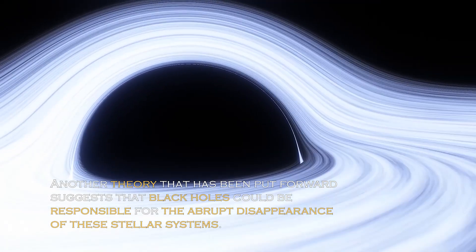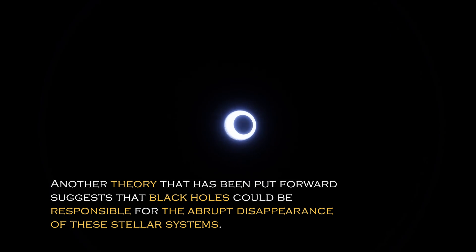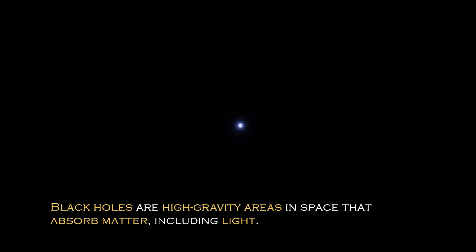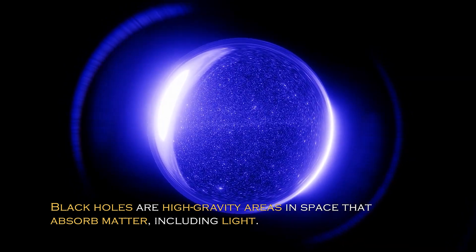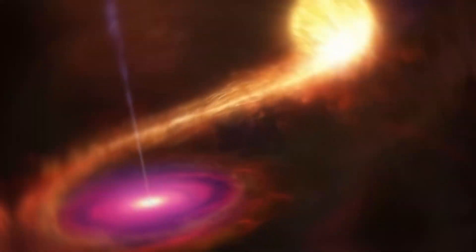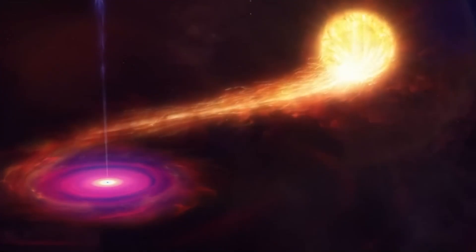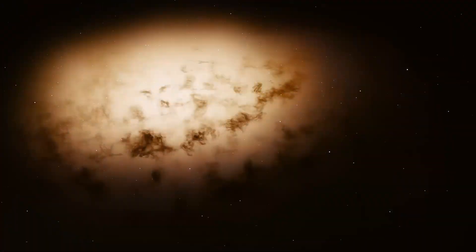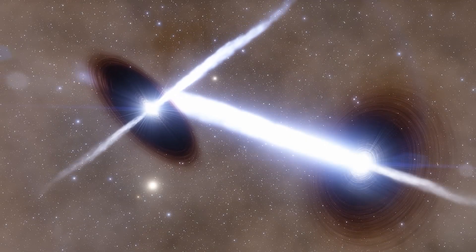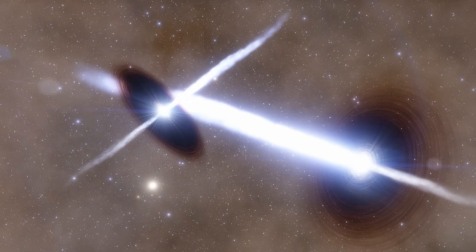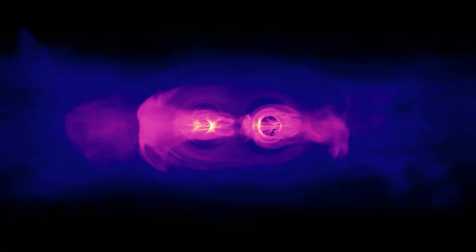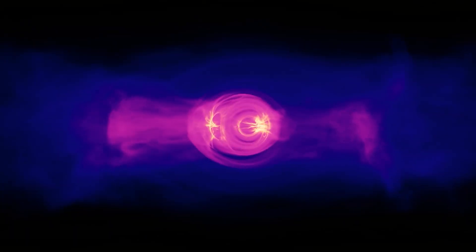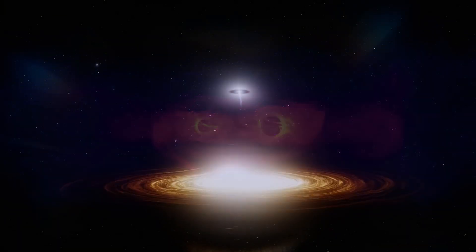Another theory that has been put forward suggests that black holes could be responsible for the abrupt disappearance of these stellar systems. Black holes are high-gravity areas in space that absorb matter, including light, and are sometimes absorbed consuming entire stars. However, the theory of black holes as the cause of the massive disappearance of trillions of stars seems unlikely. It would require an excessive number of black holes to eliminate such a huge number of stars, which does not seem logical or consistent with what we know about these astronomical phenomena.